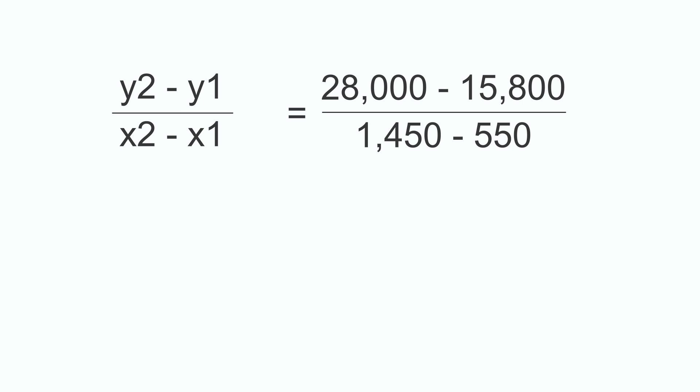Then the x values, which is the highest minus the lowest x values, which is 1,450 minus 550. This gives us the slope of the line, $13.55, which is approximately $13.55 as the variable cost per unit.